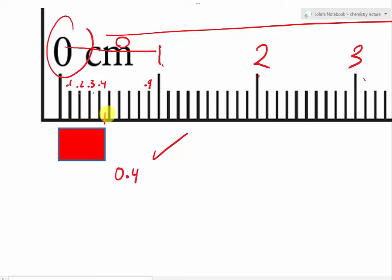Now it is ending between right here, point four and point five. And if we look at it carefully, it's about halfway, right? So this is where we have to estimate and that would be five. And your answer is zero point four five centimeters.